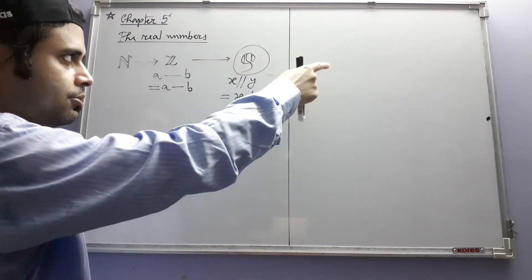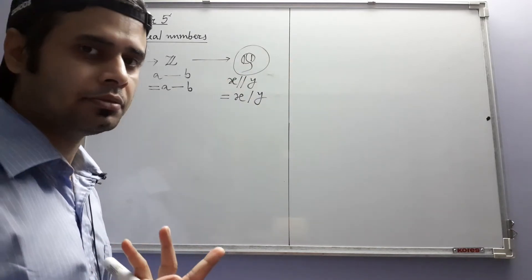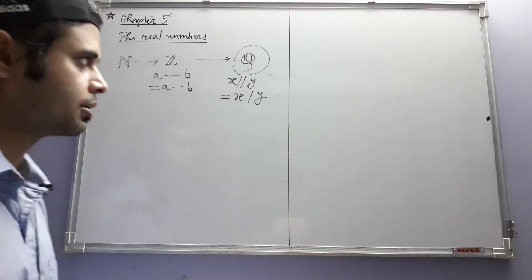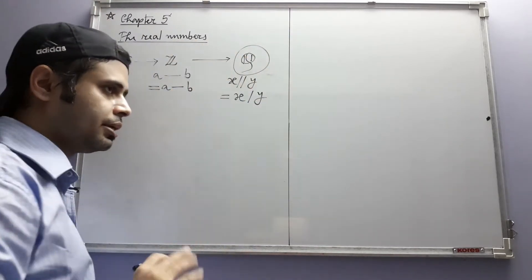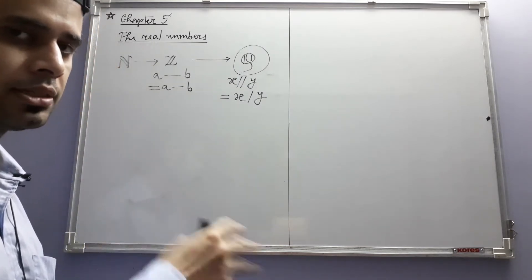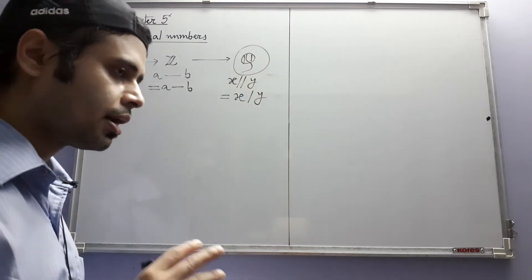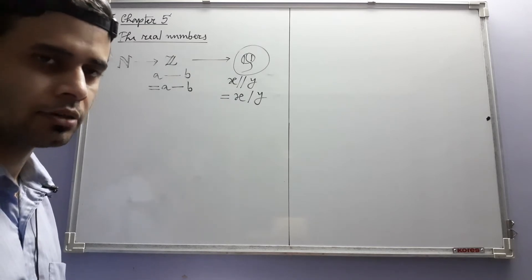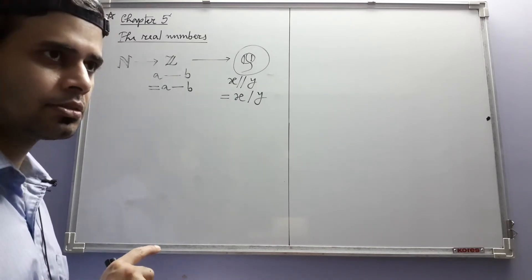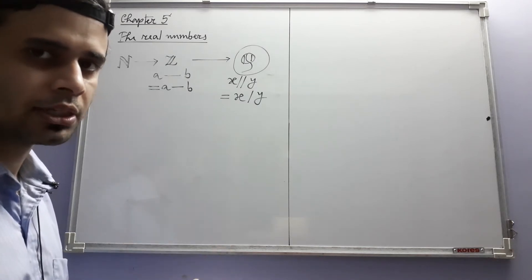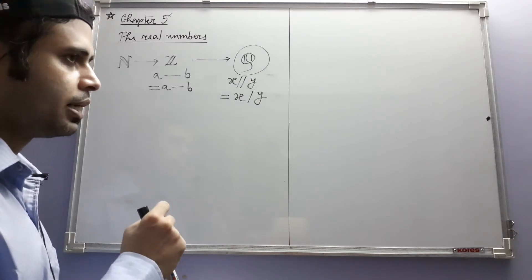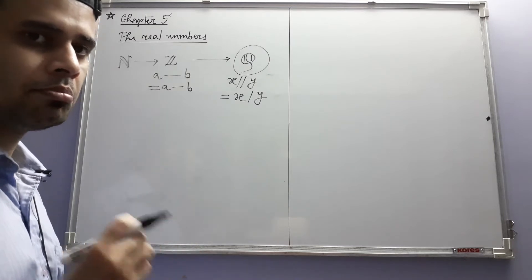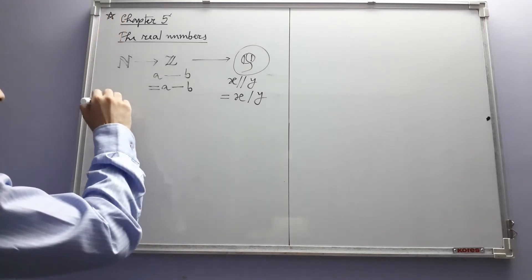We started our journey with the construction of the system of natural numbers, defining natural numbers using the five Peano axioms. After that, we recursively defined the two operations of addition and multiplication, then verified all the familiar laws of algebra. After that, we moved to the larger system of integers, where each integer was defined as a formal difference of two natural numbers, which after defining subtraction turned out to equal the actual difference.